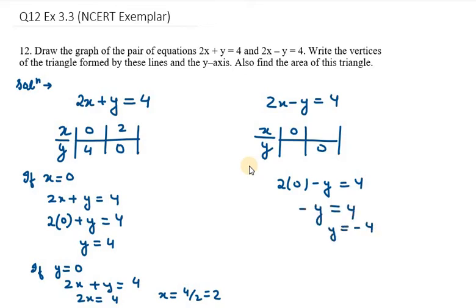Now the second one, in case of y as 0, it is 2x equals 4. So x equals 4 over 2, which is 2.